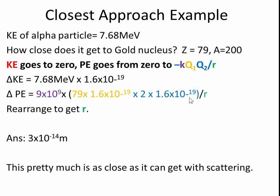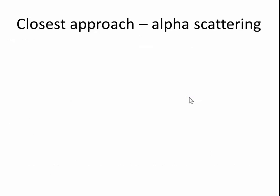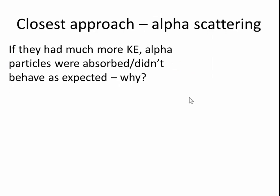This is pretty much as close as it gets with the regular scattering. Now let's have a look at what happens if it has more energy. If the alpha particle had more kinetic energy, some particles were actually absorbed or they didn't behave as expected. There's a massive electrostatic repulsion as it comes near to the nucleus. But how can it possibly be absorbed in that case? Why is that?